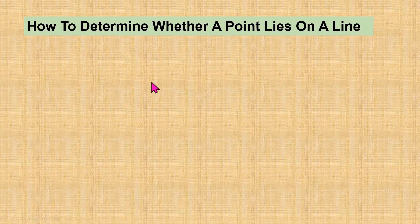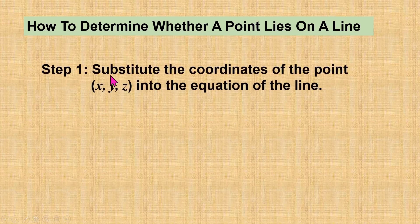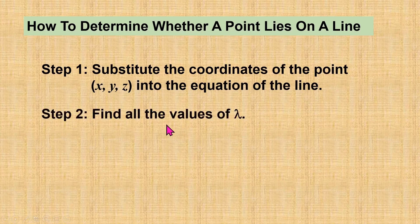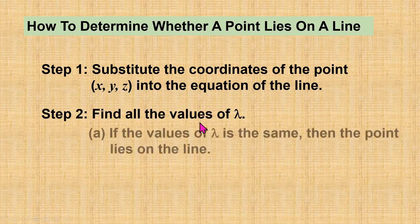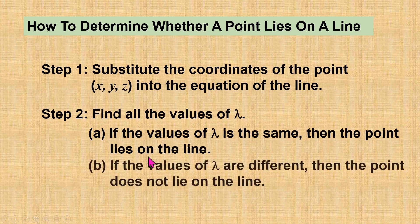To determine whether a point lies on a line, first we substitute the coordinates of the point into the equation of the line. Then we try to find all the values of lambda. If the values of lambda are the same, then the point lies on the line. If the values of lambda are different, then the point does not lie on the line.